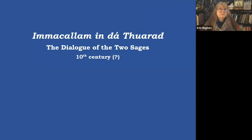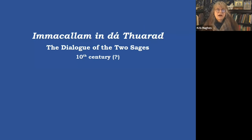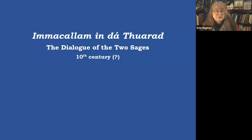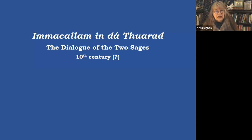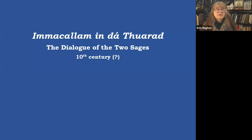Copies of this text, The Dialogue of the Two Sages, are found in a few manuscripts dating from about the 12th to the 15th century. Based on the language used in the text, scholars suggest it could be as old as the 10th century. So this is what we're talking about today: The Dialogue of the Two Sages.